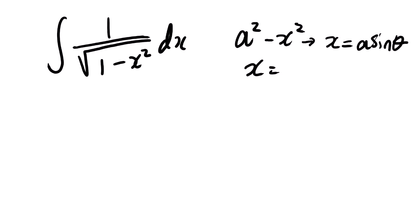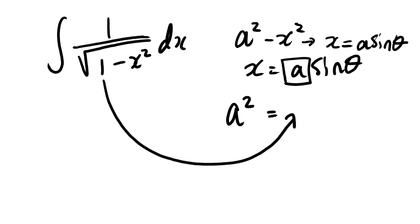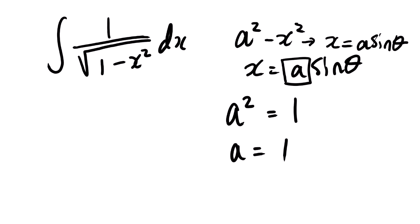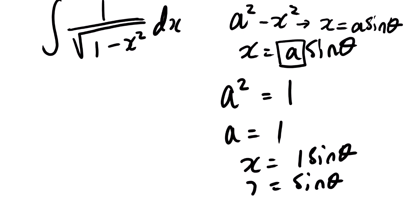Since the expression matches a squared minus x squared, we substitute with x equal to a sin theta. We need to figure out the value of a: since a squared equals 1, taking the square root gives a equals 1. Therefore x equals 1 times sin theta, which is simply sin theta. Wherever we see x, we substitute with sin theta.